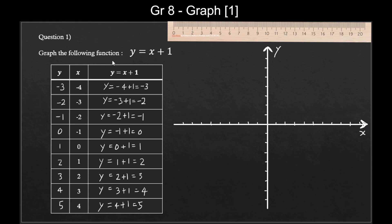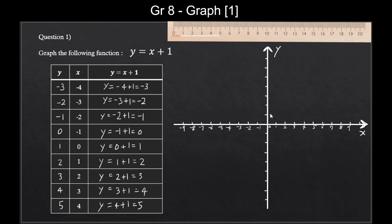We will also assign numbers to the tick marks. Starting from the center with zero, each tick mark going right will be 1, 2, 3, 4, 5 — write as small as possible. On the left side we go backward, so minus 1, minus 2, minus 3. We do the same for the vertical line, starting from zero, going up and going down.